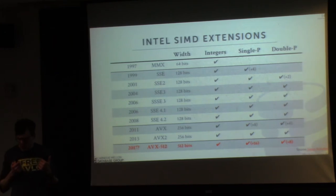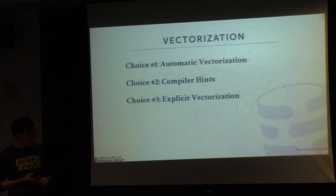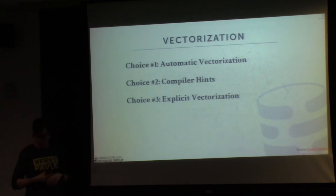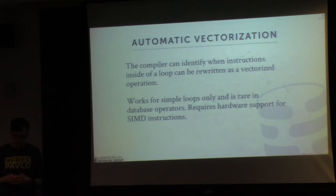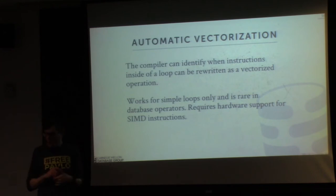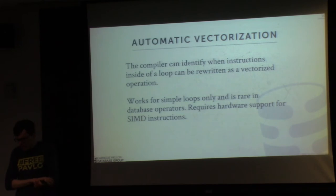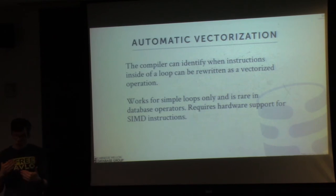SIMD is clearly something we want in our database system—it's one way Intel gets better performance, in addition to adding more cores. We have three choices to enable it. The first is automatic vectorization: we don't change our code and just hope the compiler—GCC or Intel ICC—is smart enough to find opportunities to vectorize. The problem is this only works for really simple loops constructed the right way, which are rare in a database system.